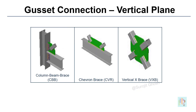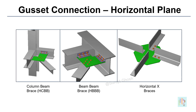There are different types of gusset connections — in the vertical plane with beam, column and brace, or only cross bracing. Horizontal gusset connections support similar arrangements. For any gusset connection, all force components from beam, column and bracing are considered during design, and gusset plates are designed considering the gap required to fit the individual beam-column connection.